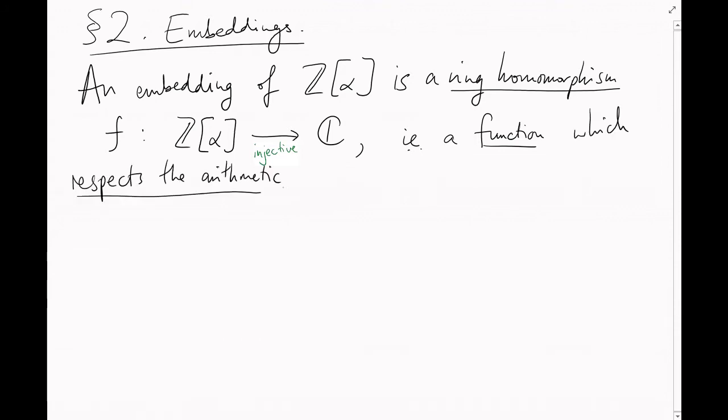But secondly, f also respects the arithmetic in Z alpha. That is, all the numbers behave over here how they did over here, under addition, subtraction, and multiplication. You can do arithmetic in whichever picture you like, and you'll get the same result either way.